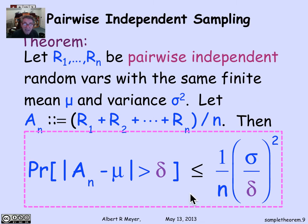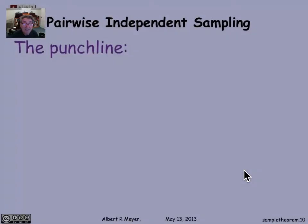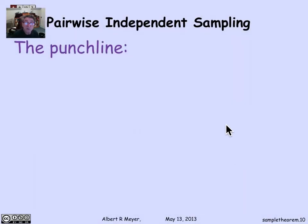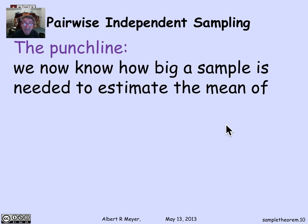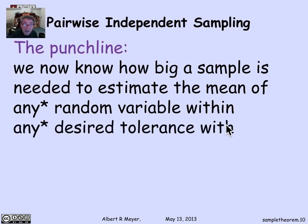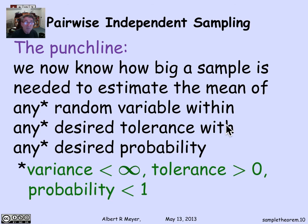What this tells us is that if you give me delta and tell me how small you want this probability to be, and I know sigma, then I know how big an n to choose. This tells me how large a sample I need — how many trials to make — in order to get the probability that the mean is within a specified tolerance delta as small as you specified. That is our independent sampling theorem: we now know how big a sample is needed to estimate the mean of any random variable with any desired tolerance and any desired probability, provided the variance is finite, the tolerance delta is positive, and the probability is less than 1.